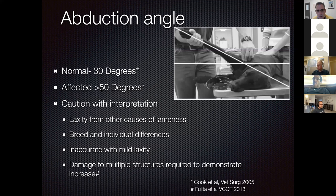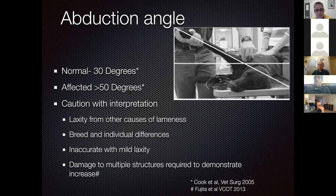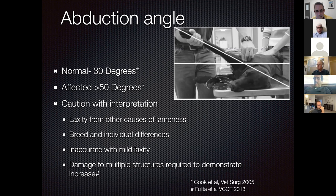The other diagnostic maneuver is checking abduction angle. Keep the scapula horizontal, push it down to immobilize it, then try to abduct the shoulder joint. Normal is about 30 degrees. Affected patients show 50 degrees or greater. There are breed and individual differences, and it is inaccurate with mild laxity, so compare one side with the other. This doesn't definitively confirm medial glenohumeral ligament instability but raises your index of suspicion. Some dogs can be abducted out to about 90 degrees, indicating severe damage.